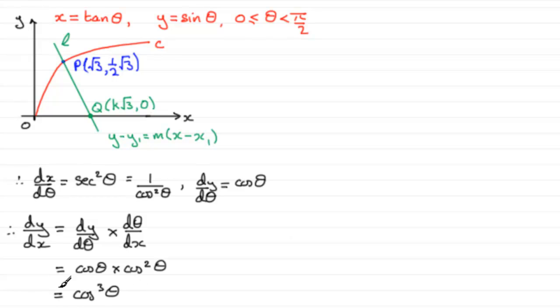Cos theta times cos squared theta clearly gives us cos cubed theta. So we've got the gradient now at any point on the curve C. We can get the gradient of the tangent at the point P now just by saying that P in the previous part we worked out that theta was pi upon 3.